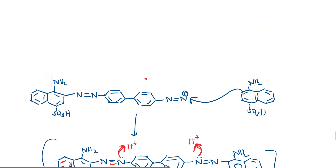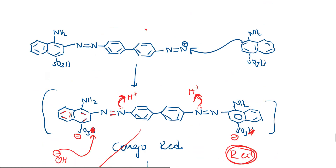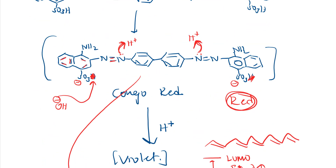So that is all about Congo red — a direct or substantive dye. Its synthesis, structure, and color change mechanism have all been discussed. In the next class, we will look at one more dye.